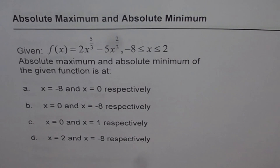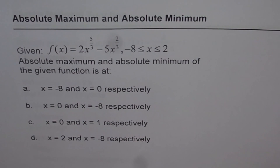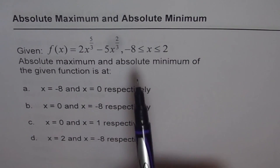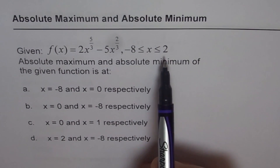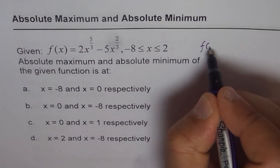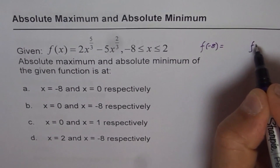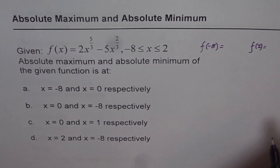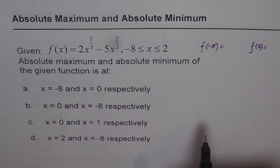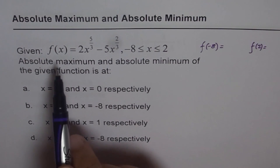Before looking at the options, it's better to find the solution and then match the answer. To find the absolute maximum and absolute minimum when a function is given with boundary conditions, we find the value of the function at the boundaries, which are minus 8 and 2, so we find f(minus 8) and f(2). We also find the value of the function at the critical numbers, which requires finding the derivative.